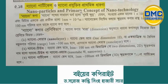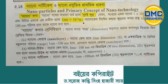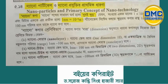1 nanometer is 10 to the power of minus 9 meters. From this scale, we have a nanoscale system.